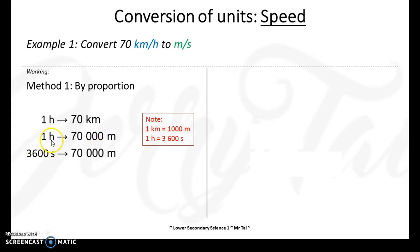And one hour is 3,600 seconds. By proportion, one second gives me about 19.4 meters, rounded off to 3 significant figures. So, 70 kilometers per hour is approximately 19.4 meters per second.